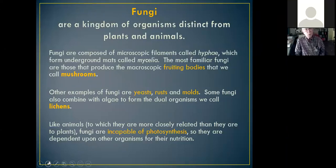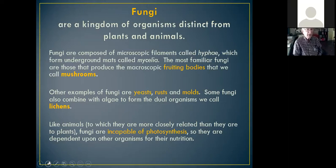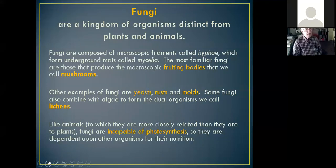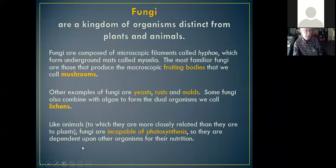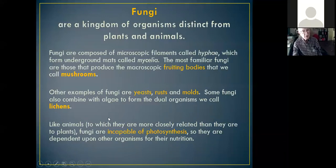The ones that produce large fruiting bodies are what we call mushrooms. There are certainly fungi that don't produce a fruiting body — the most familiar would be yeast, mold, and parasites of cereal grain called rust. There's also a combination organism called lichens, because some fungi combine with algae to form these dual organisms. Surprisingly, fungi are more closely related to us than they are to plants.